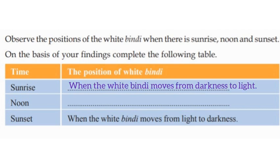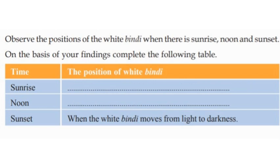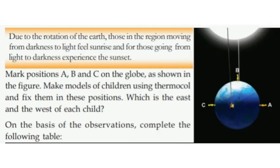When the white bindi moves from darkness to light, when the white bindi faces light, when the white bindi moves from light to darkness — due to the rotation of the earth, those in the region moving from darkness to light feel sunrise, and those going from light to darkness experience sunset.